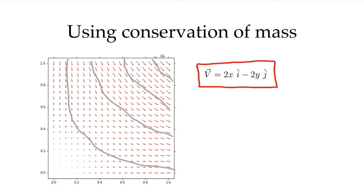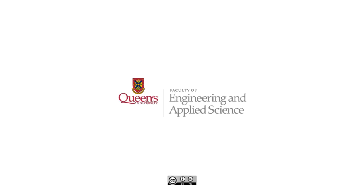If the added function makes v more negative, more flow comes in through one face, but exactly the same additional amount goes out the other face. Conservation of mass is still respected. Exactly the same logic applies if we add a constant. So it would still be a valid two-dimensional incompressible flow field. That concludes our conservation of mass examples and looking at visualizing flow fields.